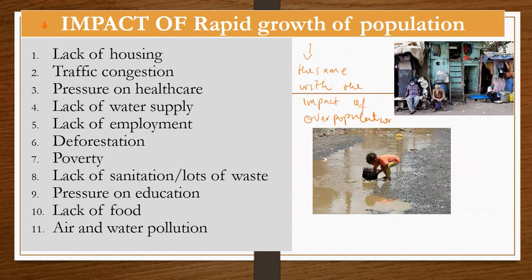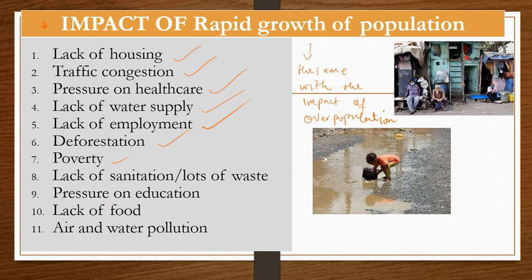If you know the problems of overpopulation, that is the same as the impact of rapid population growth. Some of the impacts include: lack of housing, traffic congestion, pressure on healthcare, lack of water supply, lack of employment leading to poverty and starvation, deforestation as forests are cleared to build infrastructure, lack of sanitation, increased waste, pressure on education, lack of food, and air and water pollution.